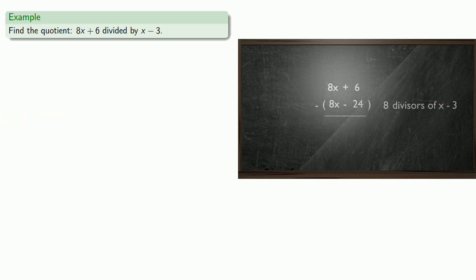Well, let's not celebrate just yet. We still have to do the subtraction. To do the subtraction, it's convenient to remember that we can subtract by adding the additive inverse. So that means instead of 8x minus 24, this is really 8x plus negative 24. And again, because we're subtracting, we'll change this to adding the additive inverses. So we'll add negative 8x plus 24. And that gives us 30. And we can summarize our results. What we've done is we've taken 8x plus 6, we've subtracted 8 divisors of x minus 3 and left a remainder of 30. So that means our quotient will be 8 plus 30 over x minus 3.